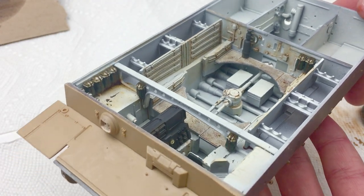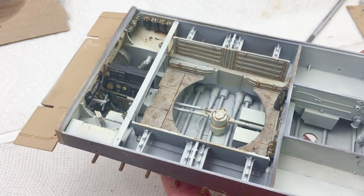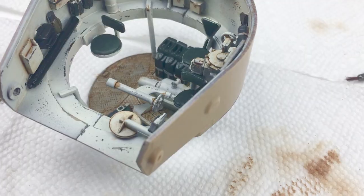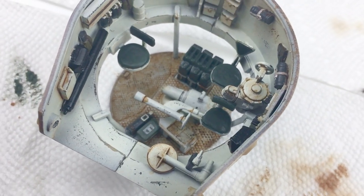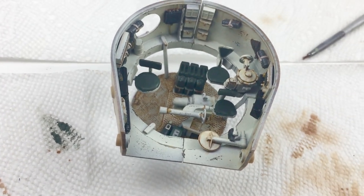Hi guys and welcome back to Scale Studio. Today we're going to finish this Tiger One's interior with hairspray chipping, oil pin washes, and some stain and streaking effects. The best part is that all these effects cost me less than twenty dollars to create. So let's save some money and get to work.